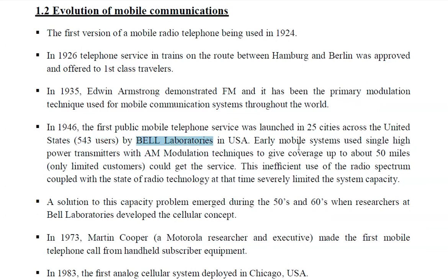Early mobile systems used single high-power transmitters with AM modulation techniques. We are going to cover AM, FM modulation, and many other modulation techniques. AM modulation gave coverage of about 50 miles, and only limited customers could get the service.